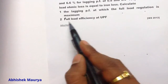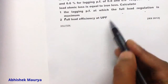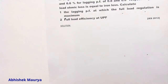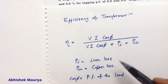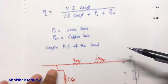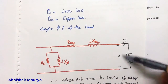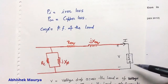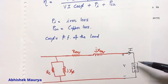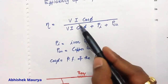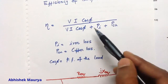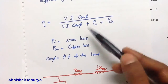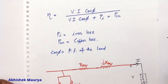Now we have to calculate the efficiency at full load at unity power factor. The efficiency of the transformer can be written as V·I·cos(phi) divided by V·I·cos(phi) plus Pi plus Pcu. Here V is the output voltage, I is the output current, and cos(phi) is the power factor of the load. V·I·cos(phi) gives the power output, and the whole denominator V·I·cos(phi) plus Pi plus Pcu is the power input.